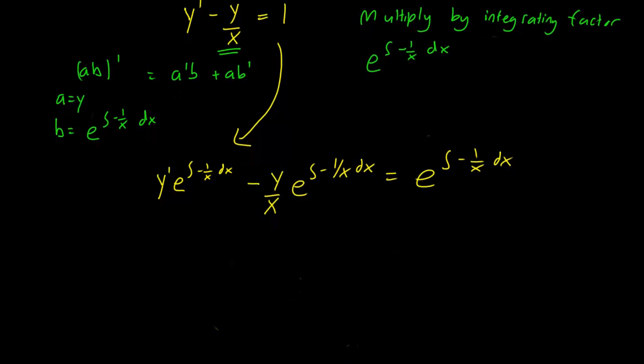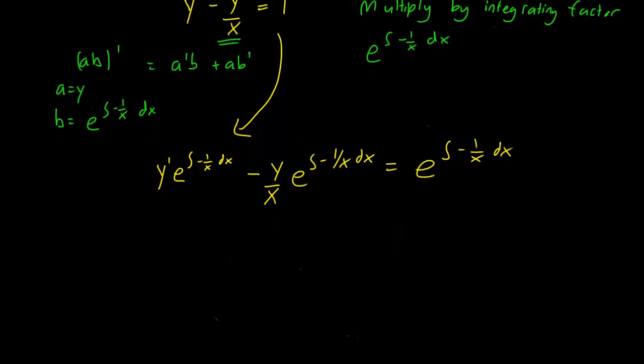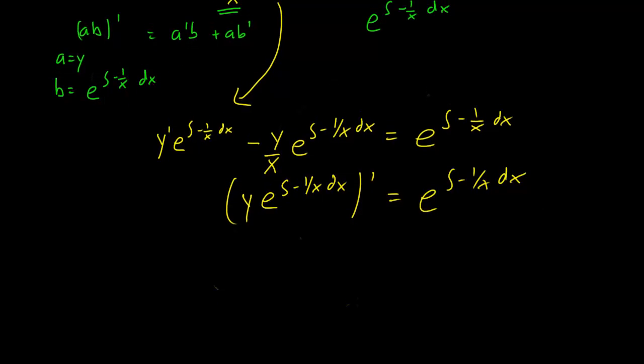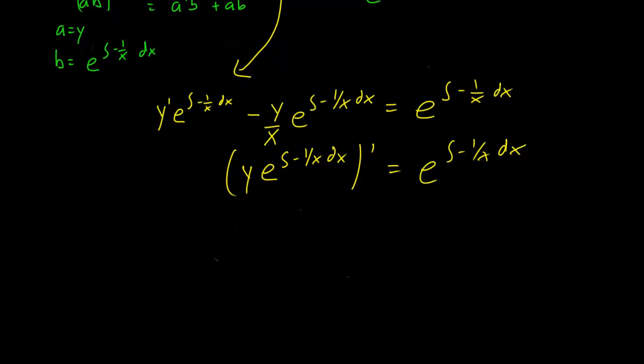So the whole point of the integrating factors technique is that we can now write the left hand side in terms of a product rule. So this is just going to be y e to the anti-derivative of minus 1 over x dx, prime, equals the exponential here. The right hand side stays the same. Right now we want to take the anti-derivative of both sides to cancel out the differentiation here.